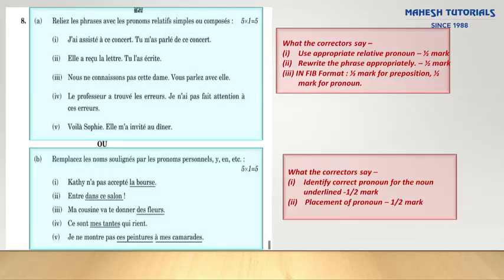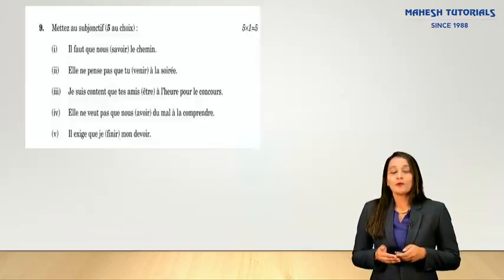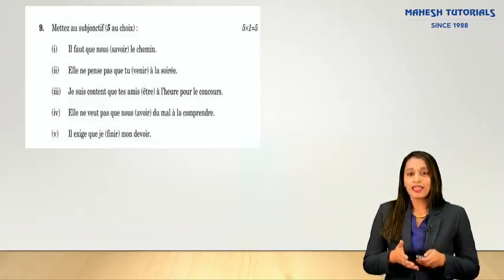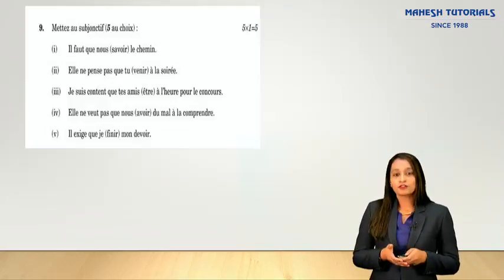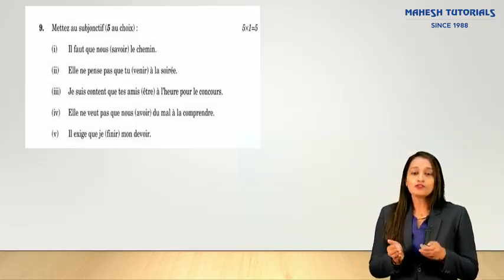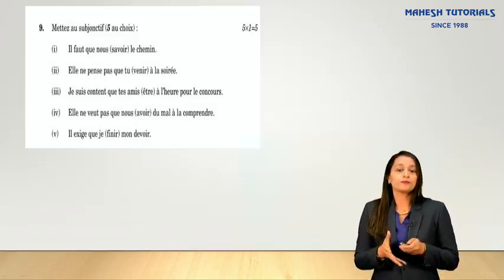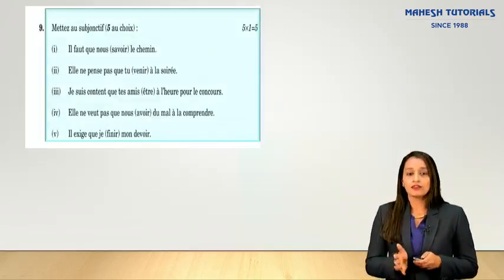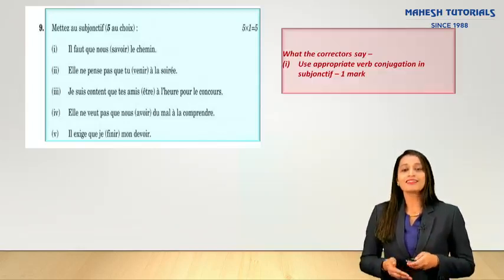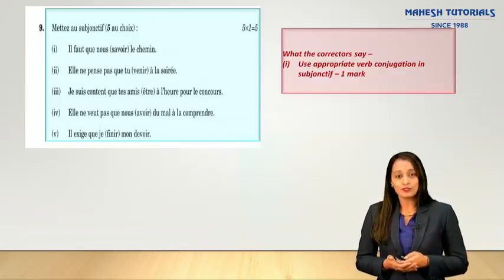Identify which topic you are best in and attempt accordingly. The last part of grammar is mettre au subjonctif. Five marks are allotted and you need to conjugate the verb given in brackets in the appropriate subjonctif form — one mark is directly allotted for each correct conjugation. All verbs given in the sentence need to be conjugated in the subjonctif.